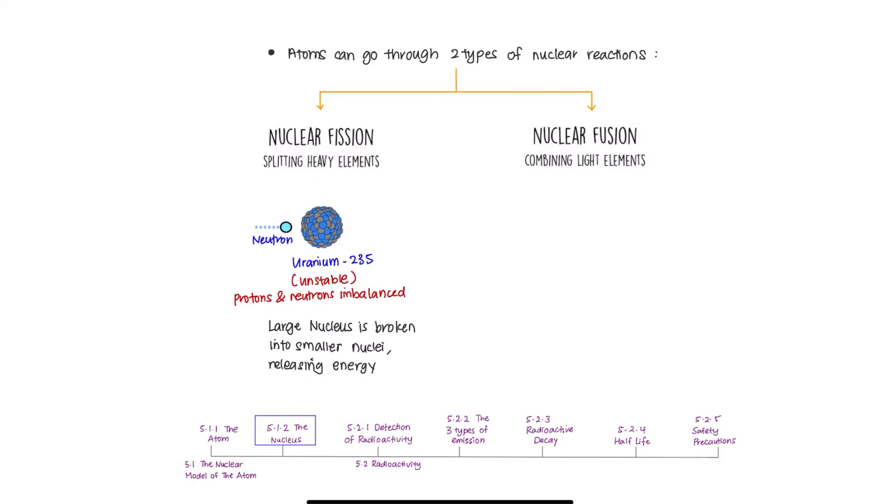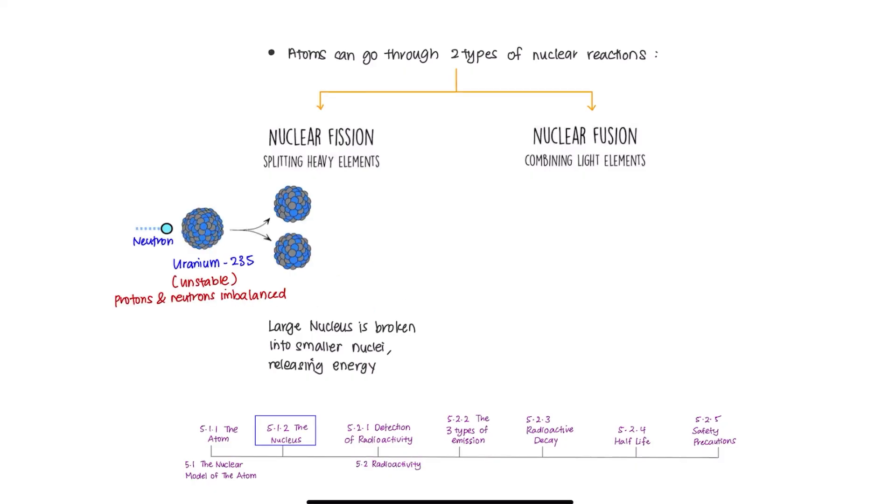So what happens is that it splits into two smaller nuclei, which we refer to as daughter nuclei. This causes some more neutrons to be released. This process is then repeated when these neutrons that are being released hit another uranium, creating more daughter nuclei, making it a chain reaction which happens continuously.